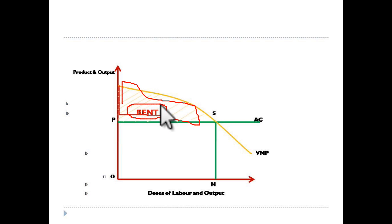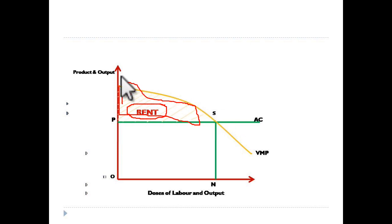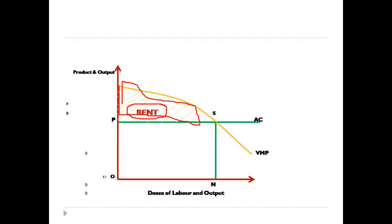To summarize the final figure: the value of marginal product equals MPP multiplied by price. The area above the average cost curve that falls under the VMP curve is called rent. Hope this video is gainful. If you have any questions, you can ask in the comment box — contacts are also given in the description of the video. Thank you very much.